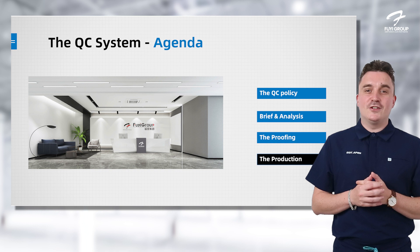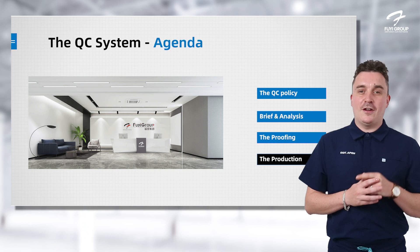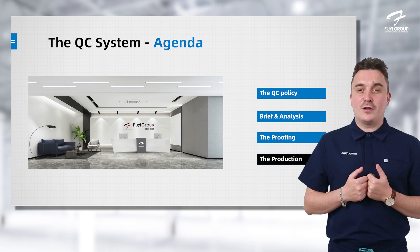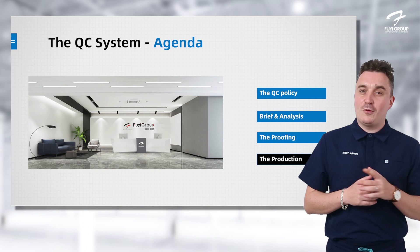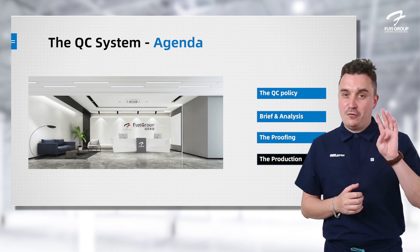The first part is going to be our QC policy, which is a very important part of how we do things here. The second part is a brief analysis that will help you understand how we take in your demands and needs and make them work for you. The third part is our proofing, and the last one — most importantly — is our production. So it's four blocks and we're going to walk through it all in this video, so stick watching guys.